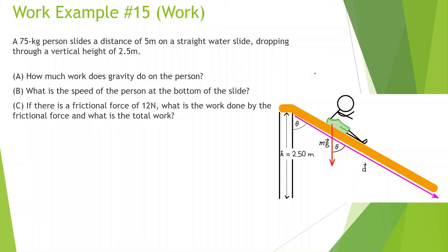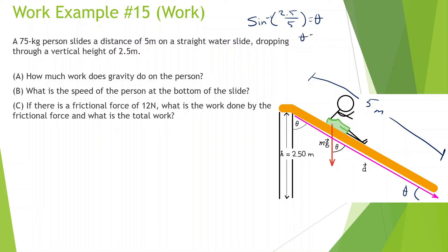This person is going to be sliding down 5 meters. We can figure out what the angle is using sine. Sine inverse of opposite over hypotenuse: that's 2.5 divided by 5, and we get theta equals 30 degrees.